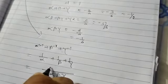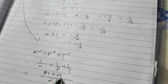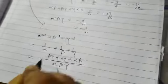And take LCM, it would be alpha beta gamma, and beta gamma plus alpha gamma plus alpha beta. And just I derived, the value of beta gamma plus alpha gamma plus alpha beta is equal to minus five by six. And the value of alpha beta gamma is minus one by six.